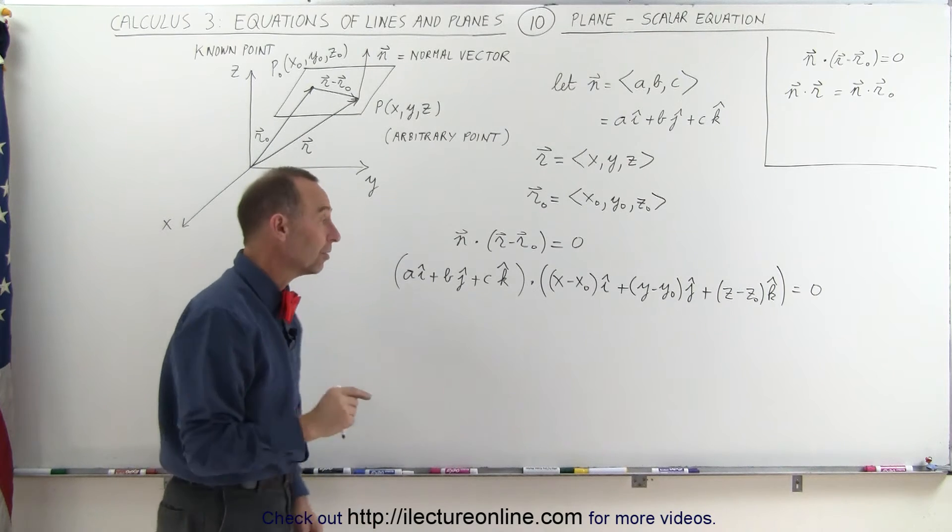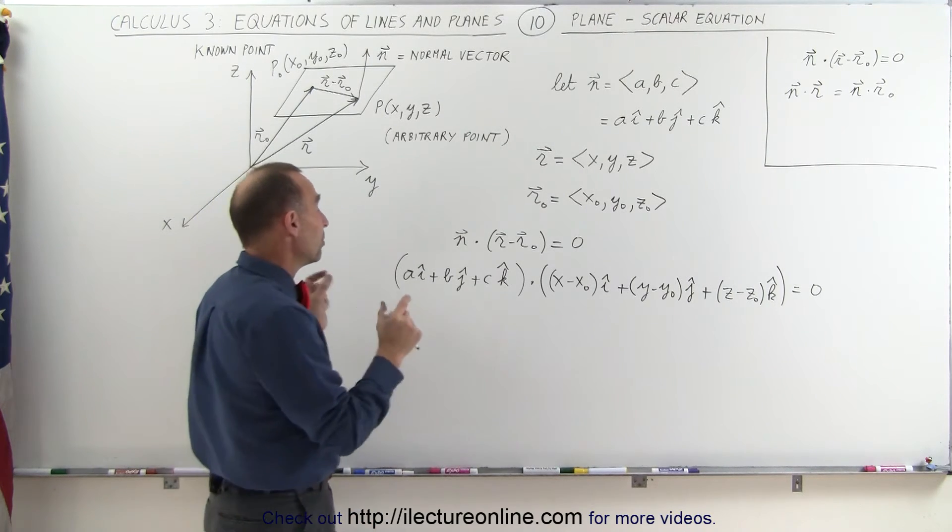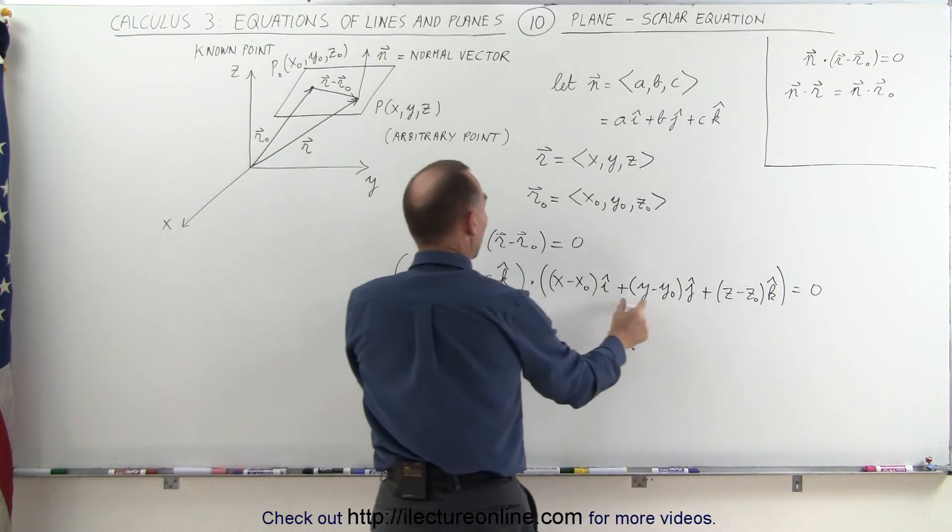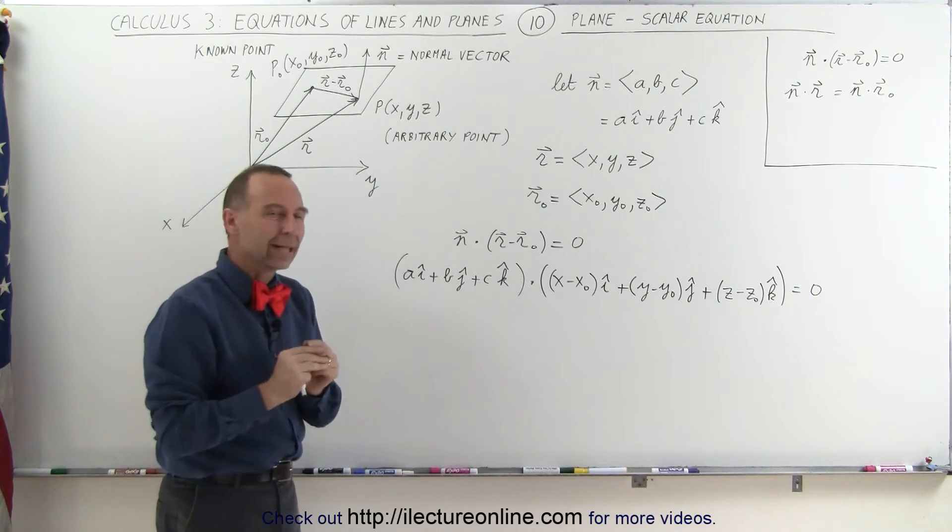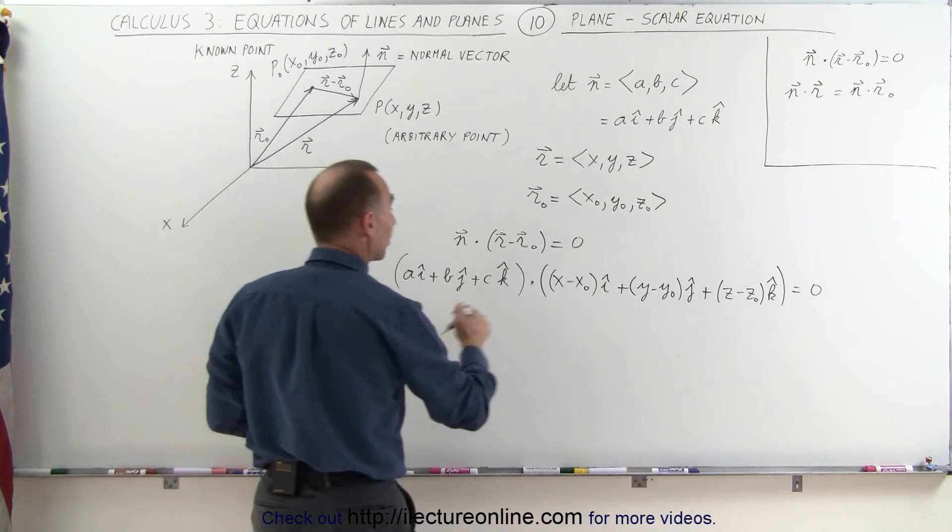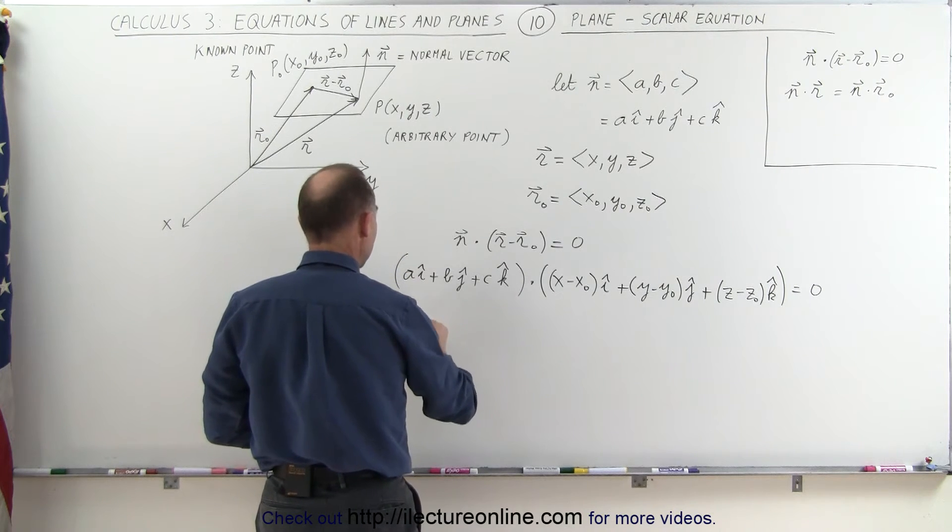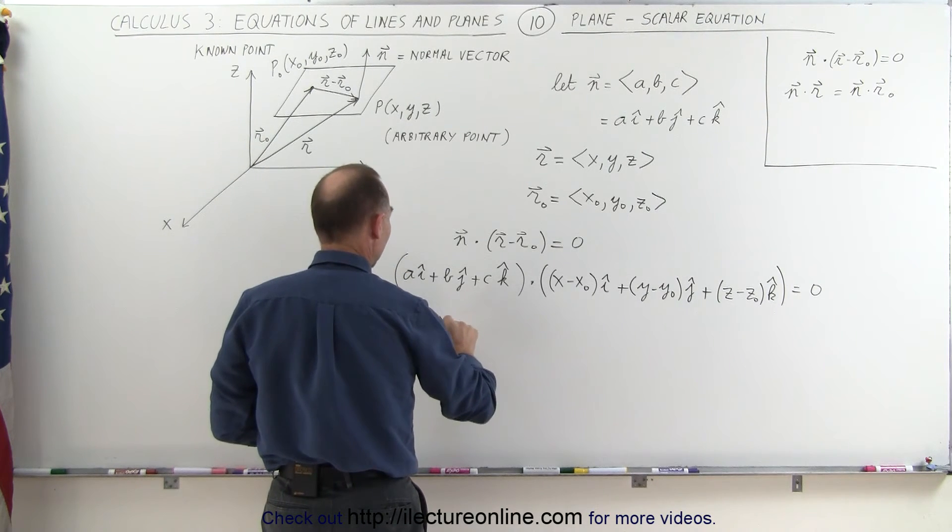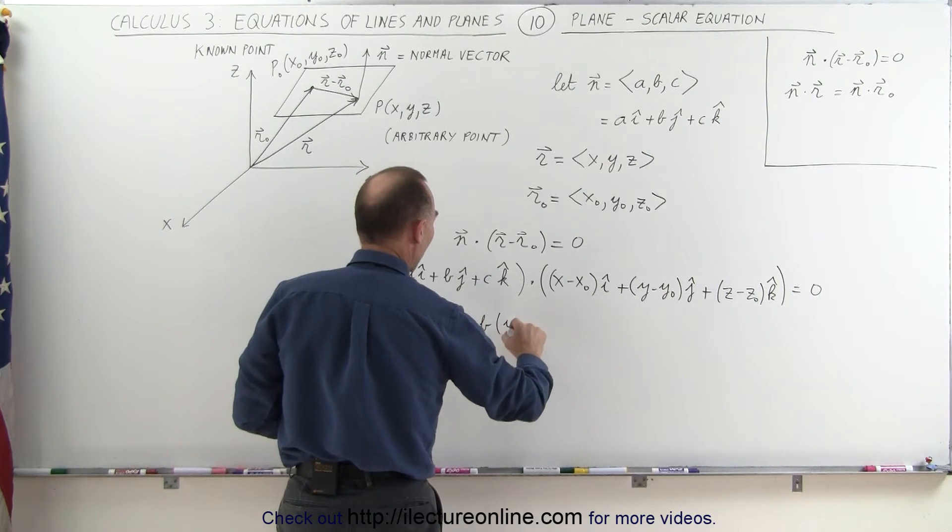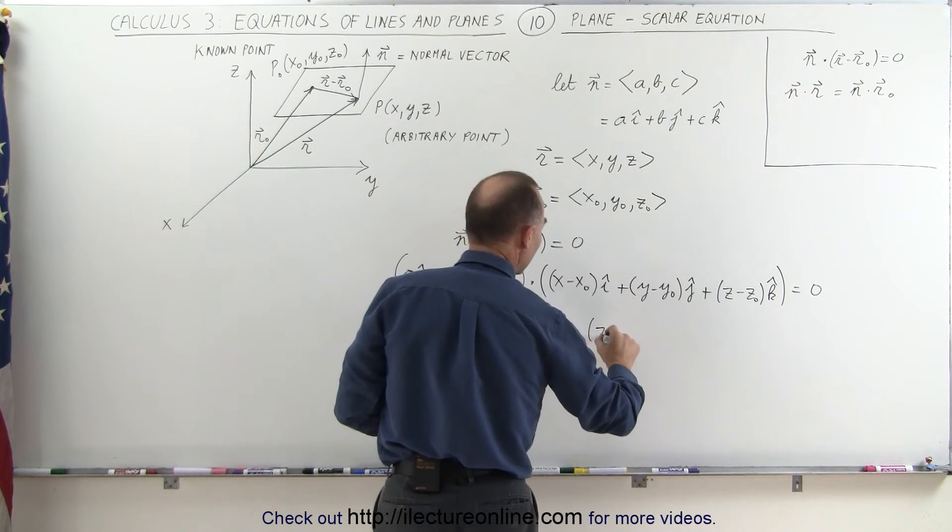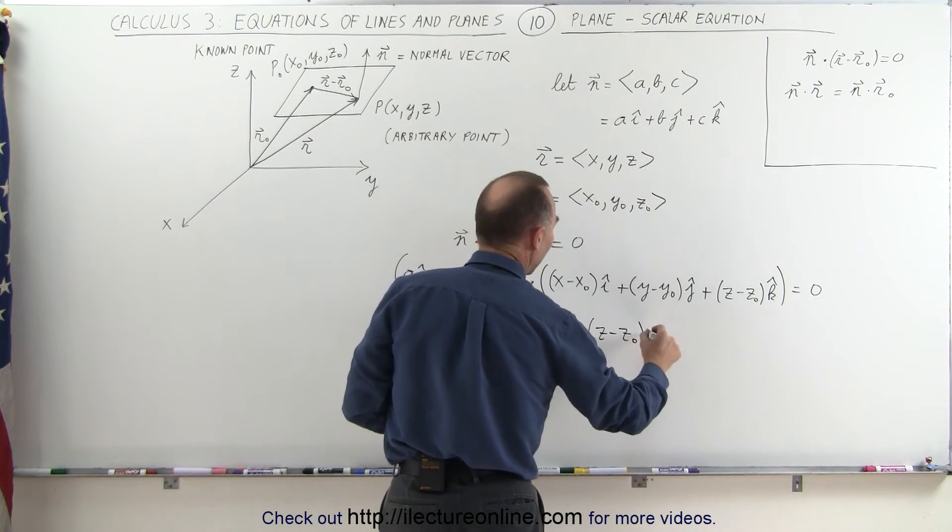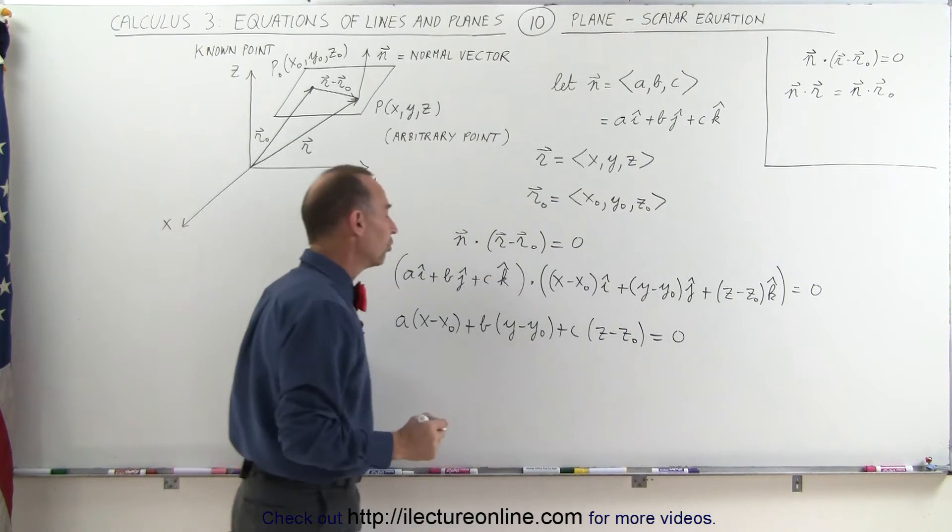Now, remember what a dot product is. You can do a dot product by simply multiplying the x-coordinates, the y-coordinates, and the z-coordinates together of the two vectors and then simply adding them together. Which means that the dot product can be written as a times x minus x sub-naught plus b times y minus y sub-naught plus c times z minus z sub-naught. And that must therefore equal zero.